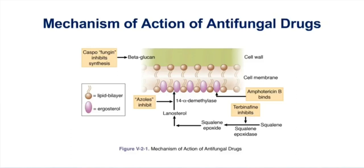The fungin drugs, like caspofungin and others, inhibit the synthesis of the cell wall component beta-glucan. So while many of our drugs target ergosterol, as we see with the fungins, there are some other targets as well.